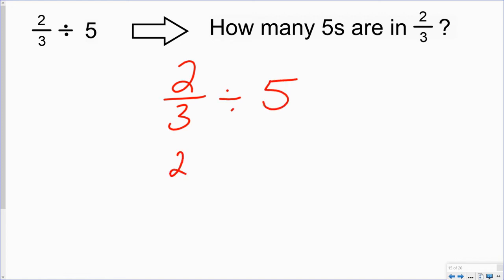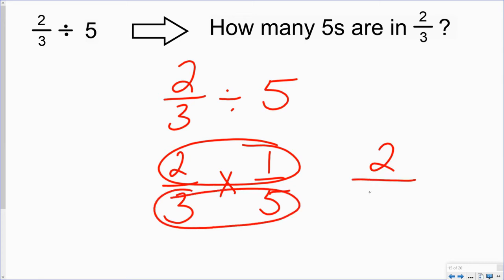Keep the first fraction. Change the division to multiplication. And look for my reciprocal or my inverse of 5, which again is 1 over 5. 2 multiplied by 1 is 2. 3 multiplied by 5 is 15. And so my answer is 2 fifteenths.